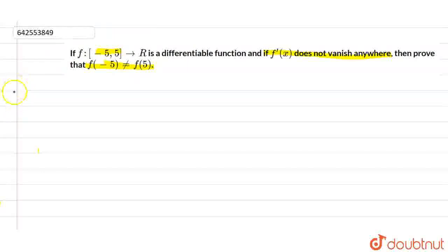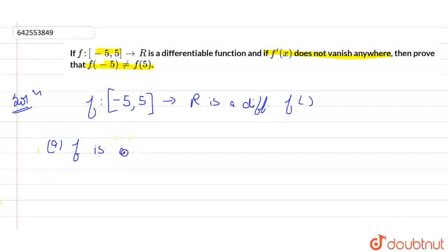So we can write it down as, since it is given to us that f is the range we have, r is a differentiable function. So we know that since every differentiable function is a continuous function, we can say that first point: f is continuous at [-5, 5].